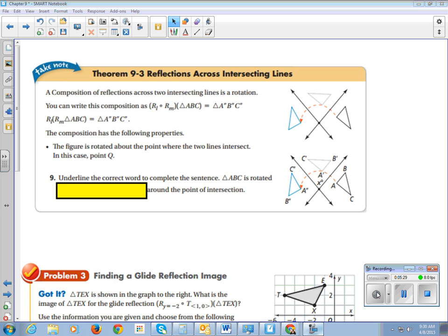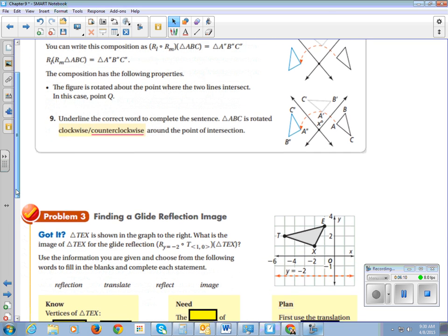Reflections across intersecting lines. We can rewrite the composition. Reflection across line L combined with reflection across line M of the triangle ABC equal to triangle A double prime, B double prime, C double prime. As the reflection across line M as the reflection across line L of the reflection across line M of triangle ABC. So we can rewrite it either way. At the end of the day, triangle ABC is rotated counterclockwise around the point of intersection.